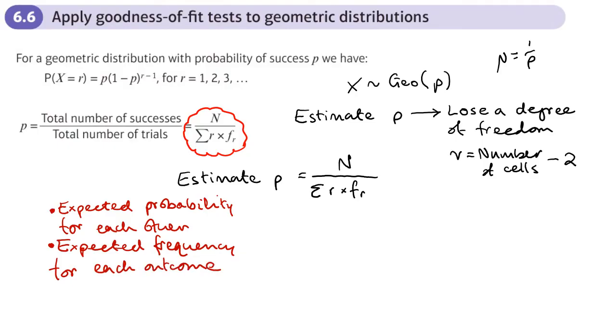Once we found the expected probability for each outcome, we then work out the expected frequency for each outcome.